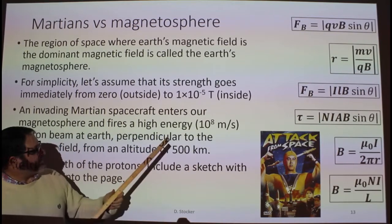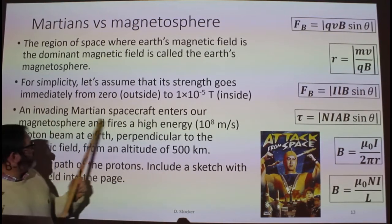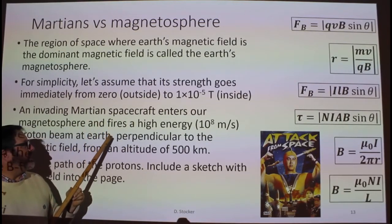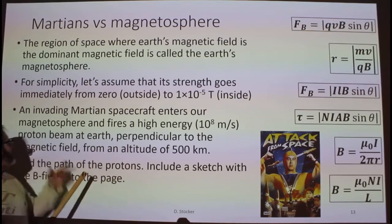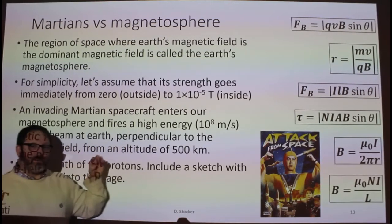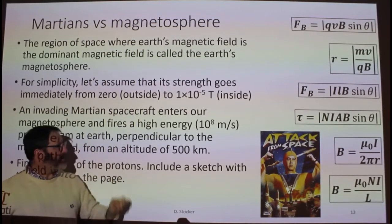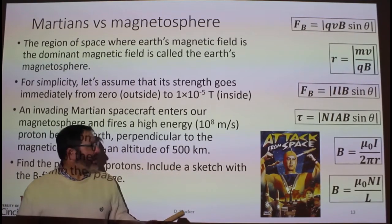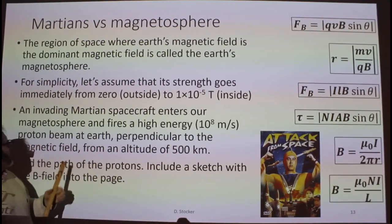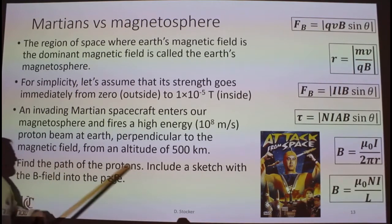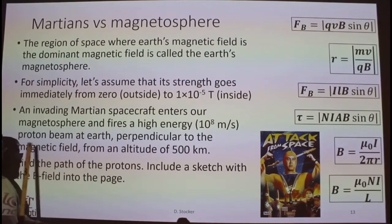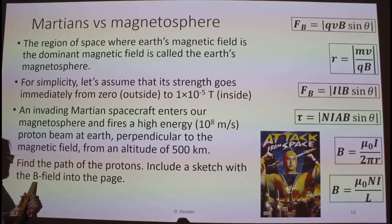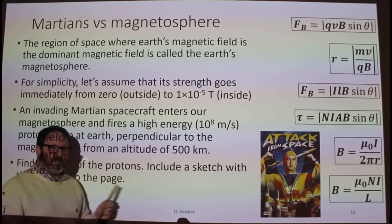Now, Martians come and they're attacking with their spacecraft. They enter our magnetosphere and fire a high-energy proton beam at the Earth—a bunch of protons coming out from their spaceship, moving at 10 to the 8th meters per second. They're hoping to destroy the Earth like this. They're at an altitude of 500 kilometers. Find the path of the protons and include a sketch where the B field is pointing into the page.